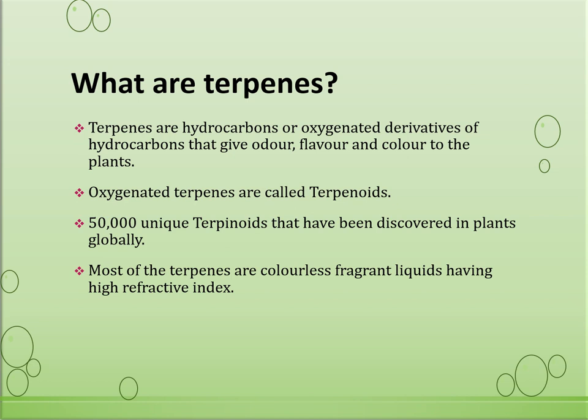What are terpenes? Terpenes are the hydrocarbons or oxygenated derivatives of hydrocarbons that give odor, flavor and color to the plants. Oxygen-containing terpenes are usually called terpenoids; they are usually alcohols, aldehydes or ketones. At present there are over 50,000 unique terpenoids that have been discovered in plants globally. Most of the terpenes are colorless, fragrant liquids having high refractive index. They are used as medicines, spices and perfumes.